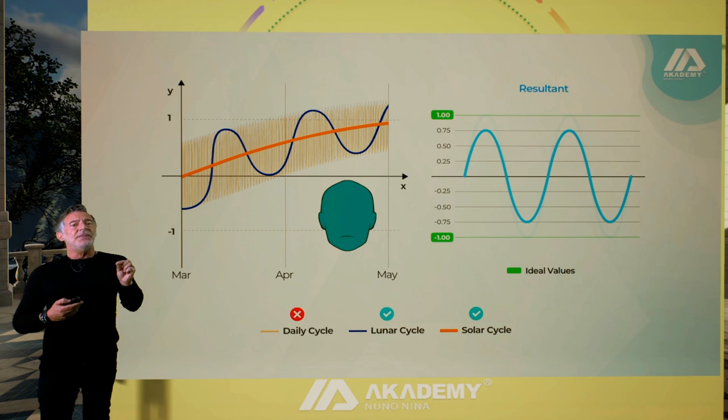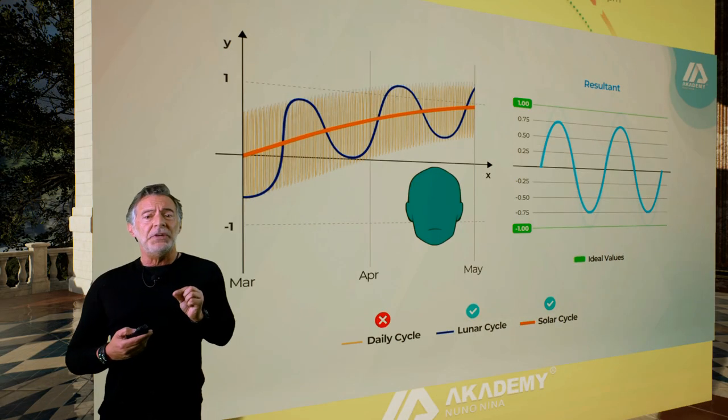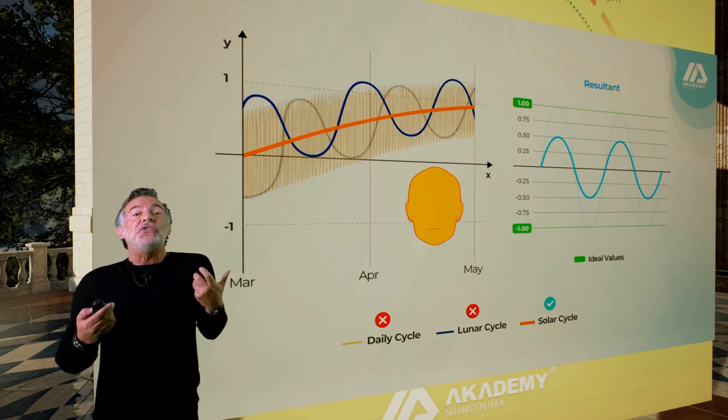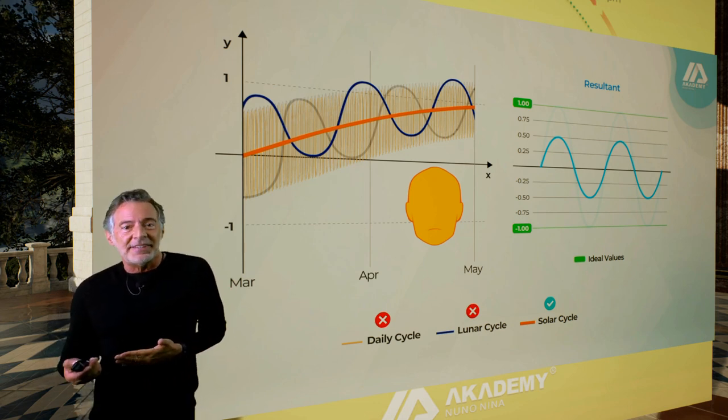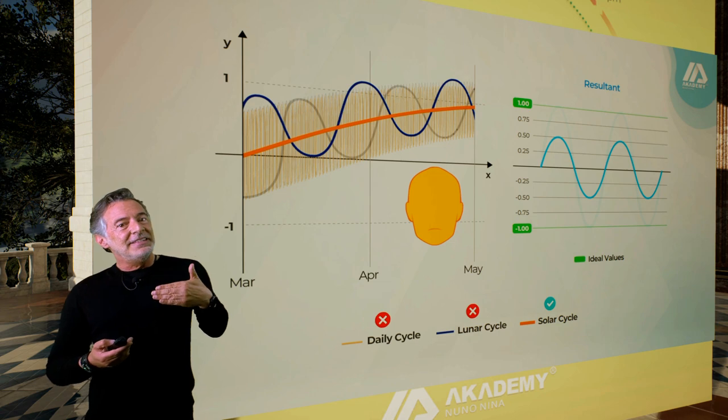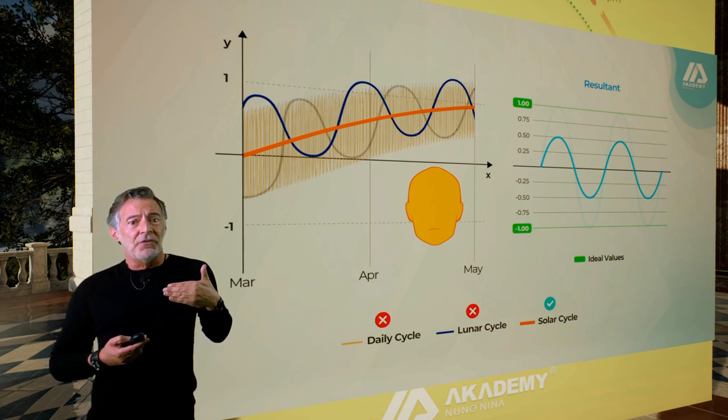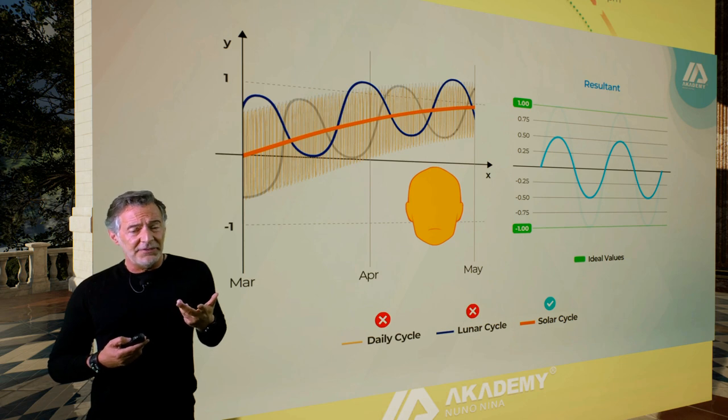Okay? And if, in addition to being out of phase with the daily cycle, I'm also out of phase with the lunar cycle, then I still have a more suboptimal resultant for healthy living.